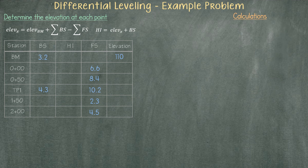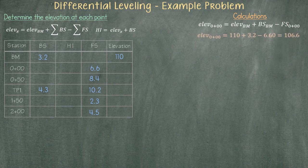The equation to determine the elevation at zero plus zero zero is: elevation at the benchmark plus the back sight at the benchmark minus the fore sight at station zero plus zero zero. The equation looks like this: elevation at zero plus zero zero is 110 plus 3.2 minus 6.6, which equals 106.6.